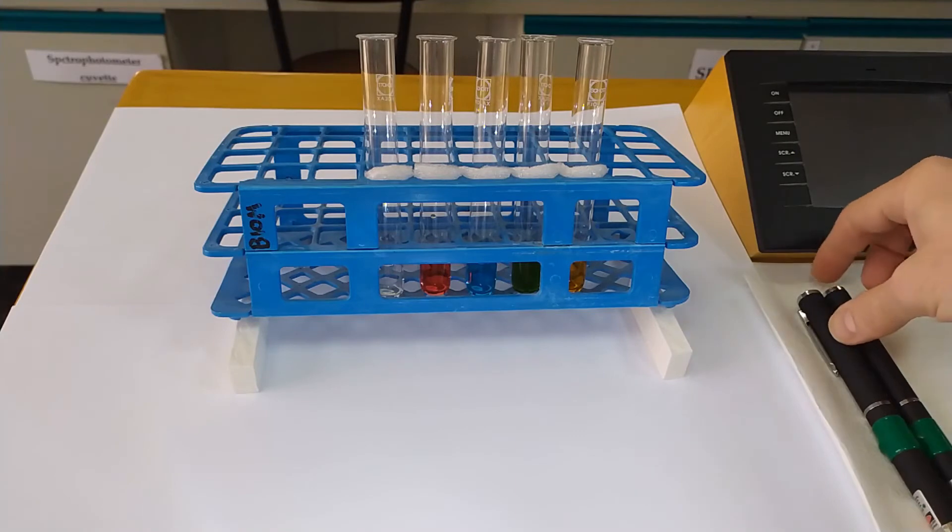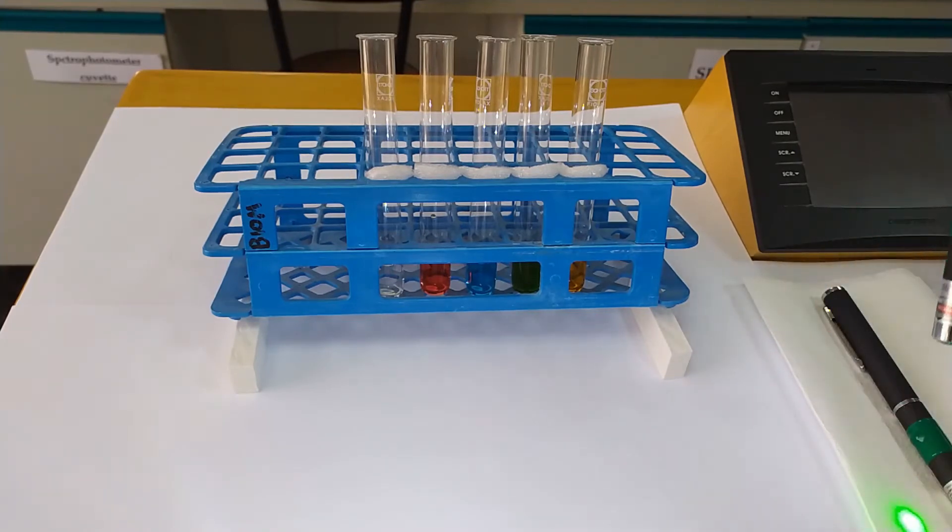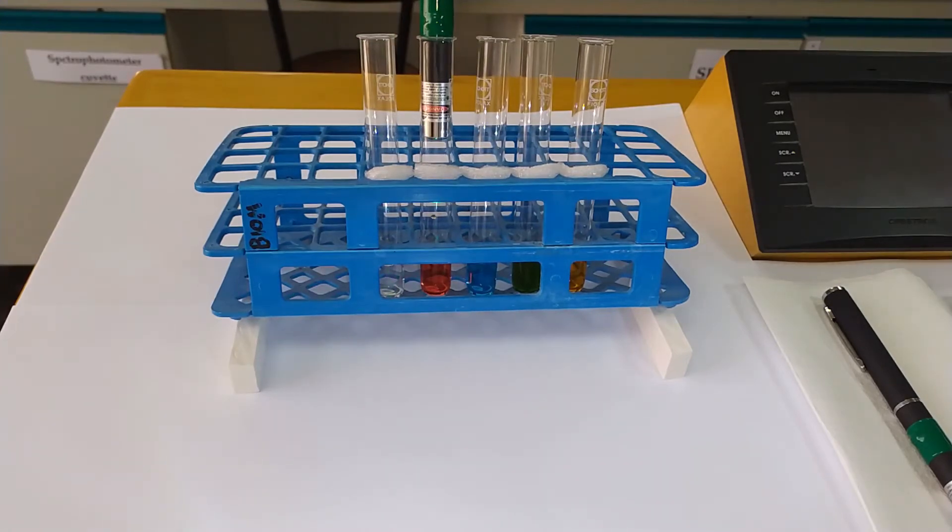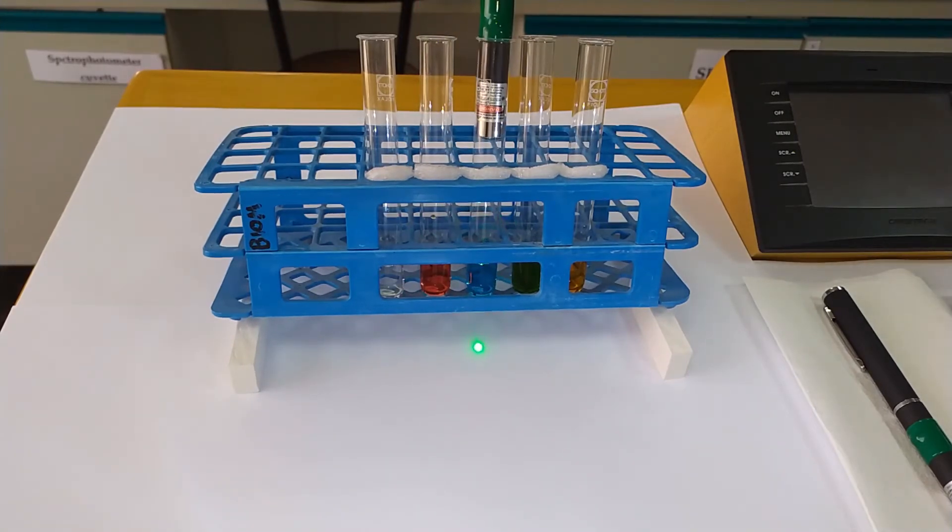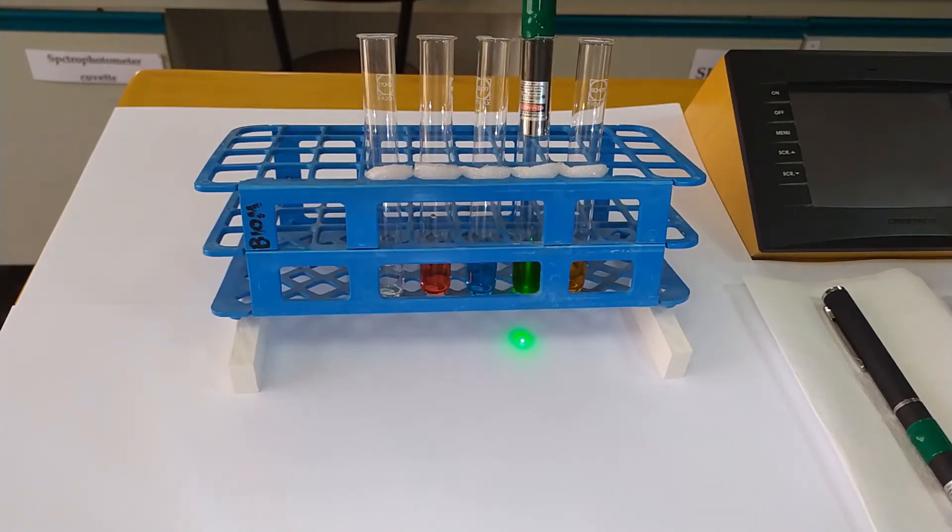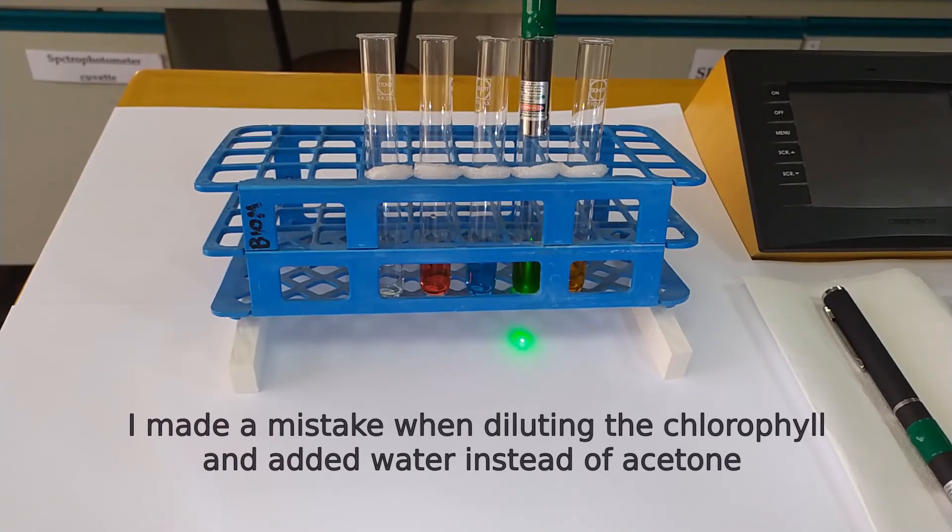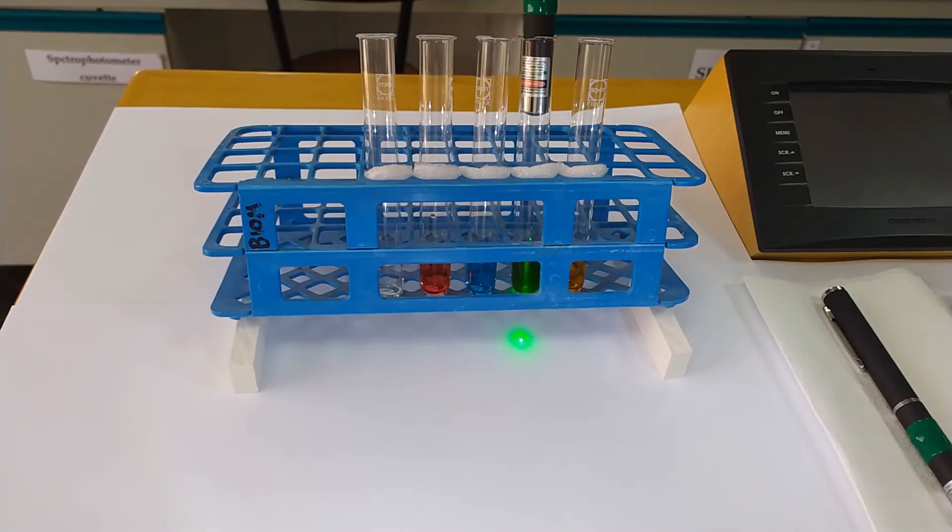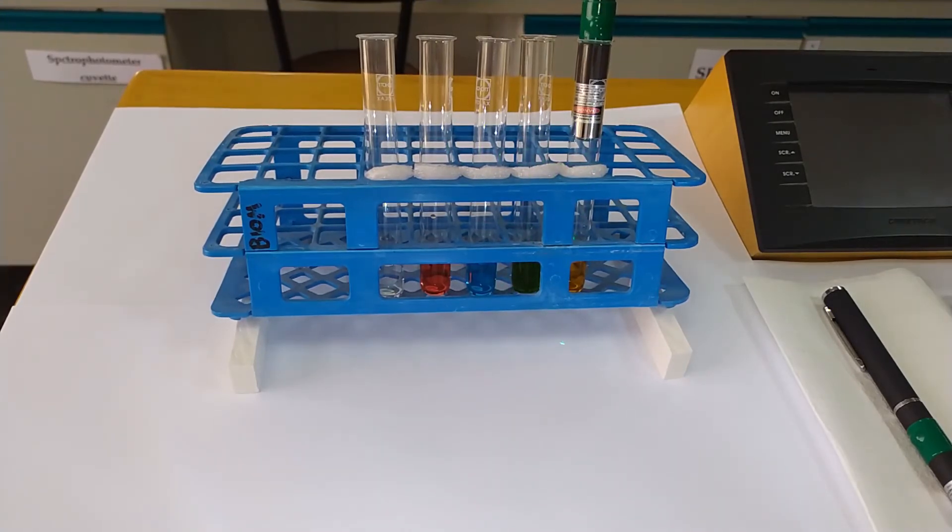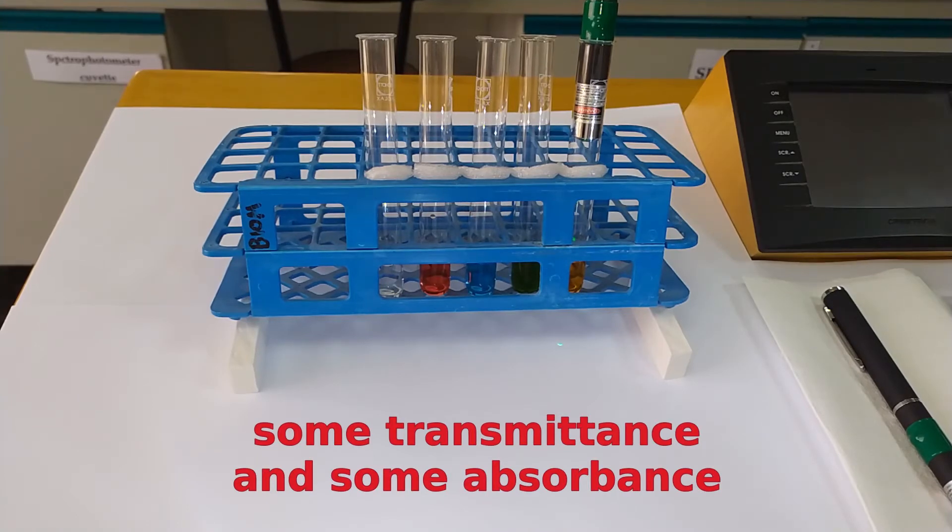Now let's try the same thing with the green light. First, the water. The light passes through without any problems. Now the red pigment. Hmm, no transmittance here. It passes through the blue solution. And the green. Now it's a bit more hazy here because the solvent is not just pure water, so it's scattering the light a little bit. And the orange solution. Some light is allowed to pass through, but it does absorb some as well.